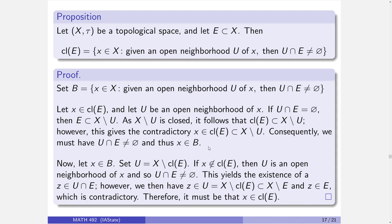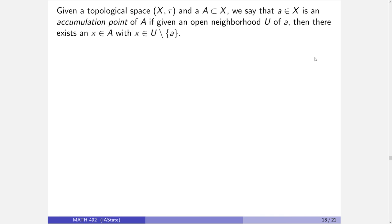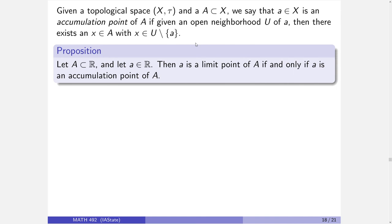We've got a nice characterization of closure in terms of open neighborhoods. Even though we're talking about the smallest closed set containing E in any topological space, any property can be described purely in terms of the open sets — that's what makes a topology a topology. If you saw this and thought: every open neighborhood meets the set, given any open interval it meets the set — wasn't that a limit point? Let's prove that. Given a topological space and a subset A, we say a point is an accumulation point if given any open neighborhood U of that point, there is an element of the set in U excluding the point itself.